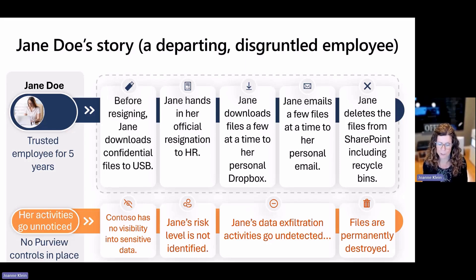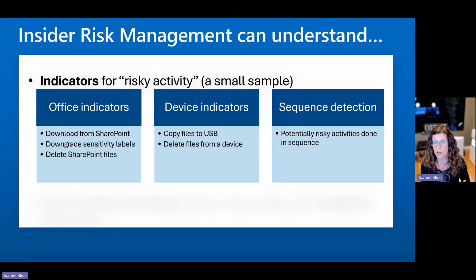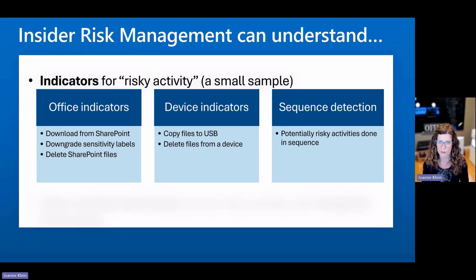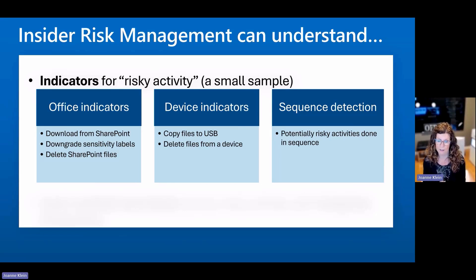So how can we use adaptive protection and insider risk management to change the sequence of events? Insider risk management understands data-related risky activity. What I'm showing here is just a very small sample of some of the things it is aware of. These particularly relate back to the scenario I just described with Jane Doe and the departing employee scenario — office indicators. It knows when you're downloading files from SharePoint, when you're downgrading sensitivity labels, perhaps so you can open them after you've departed the organization. It knows when you've deleted SharePoint files and a whole bunch of other activities and indicators it can detect.